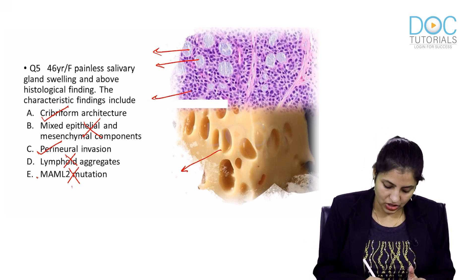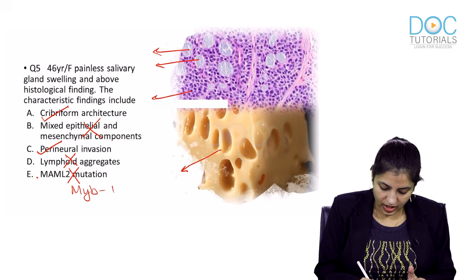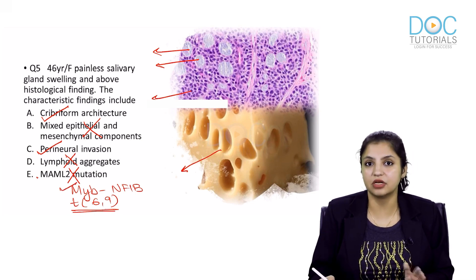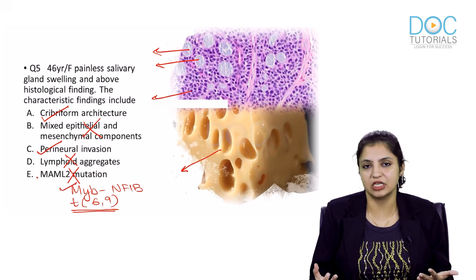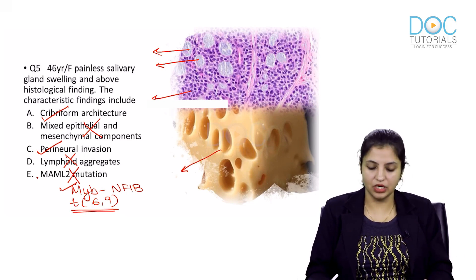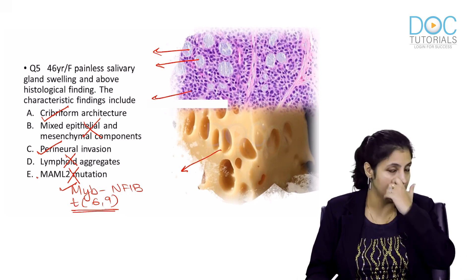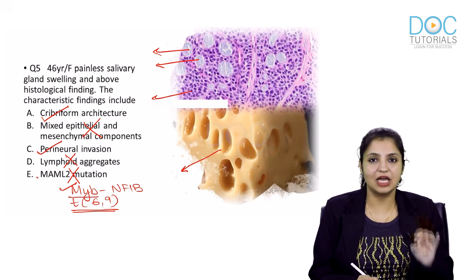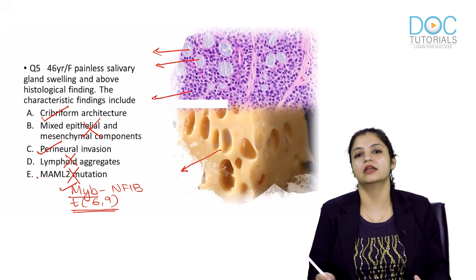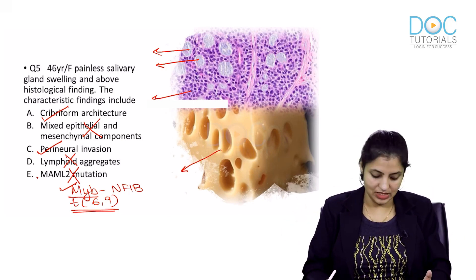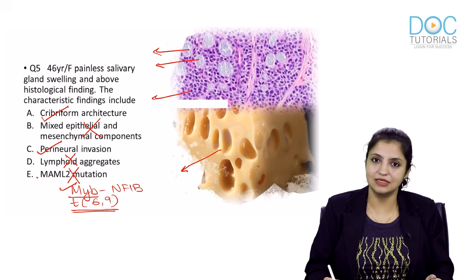In adenoid cystic carcinoma, the mutation is MYB-NFIB, translocation 6-9. MYB is a proto-oncogene that acts as a transcription factor and causes proliferation. Remember: everything in adenoid cystic occurs in multiples of 3 — cribriform pattern, MYB is 3 alphabets, translocation 6-9. So the correct answers are A and C.